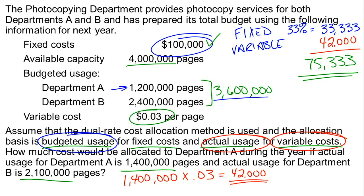So all we're doing here is the dual allocation — fixed costs based on budgeted usage and variable costs based on actual usage. It's a very common approach. We allocate the fixed costs, allocate the variable costs, add them together, and that gives us the answer. We just need to read the information carefully, follow the directions, do the math accurately, and we get the correct answer.